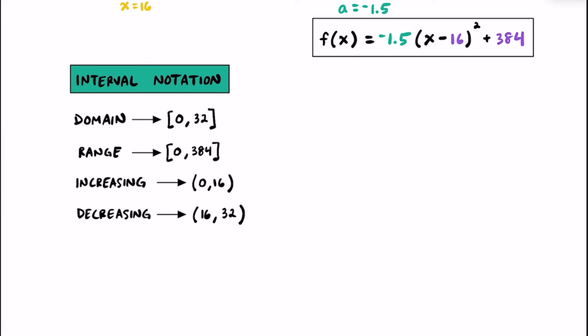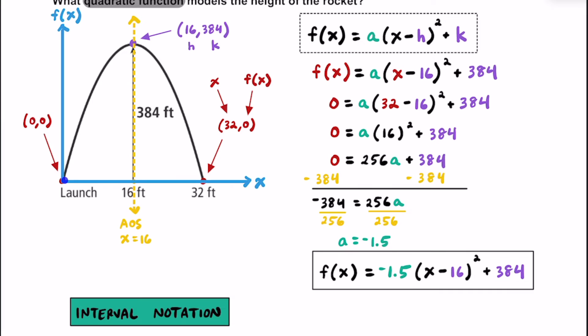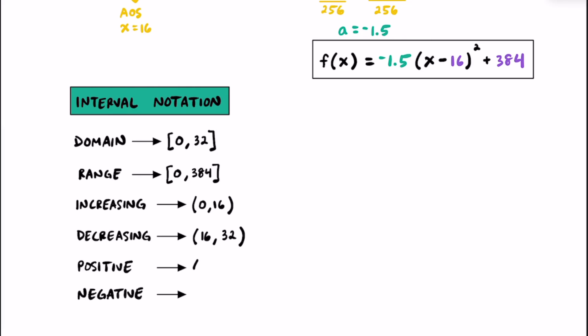There are two more basic interval notations to practice: when this function is positive and when it is negative. When the function is positive, it's above the x-axis. The rocket is always above the x-axis, so it starts being positive at x equals 0 and stops at x equals 32 — but not including 0 or 32 since at those points it equals zero. So the positive interval is (0, 32). Since the rocket is either zero or positive the entire time, there is no interval in which the parabola is negative.